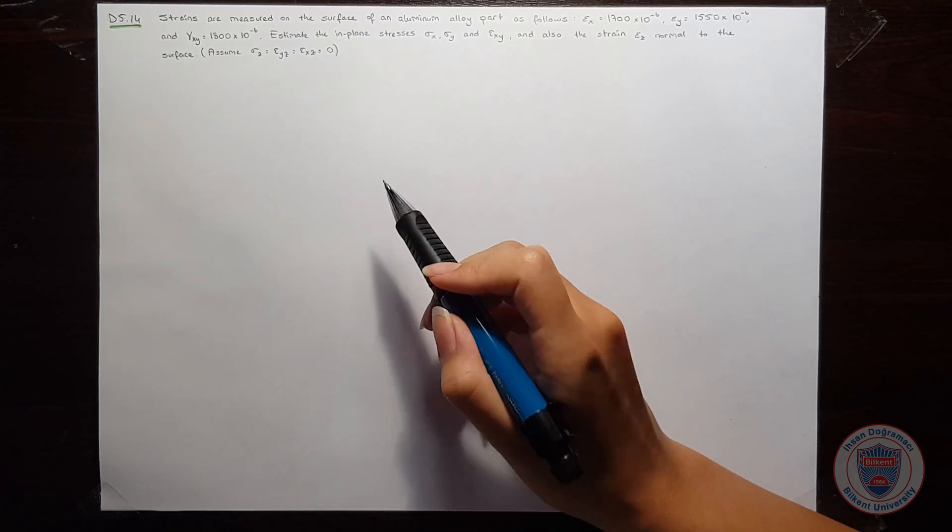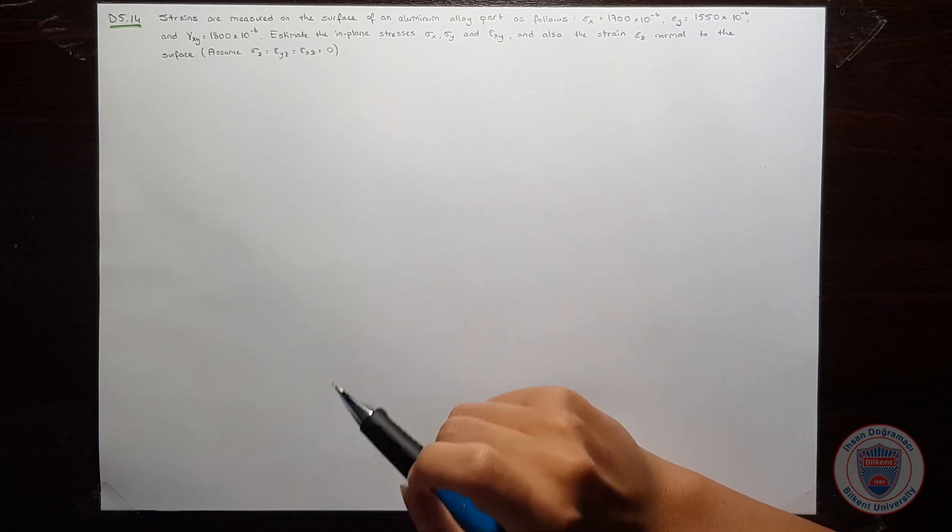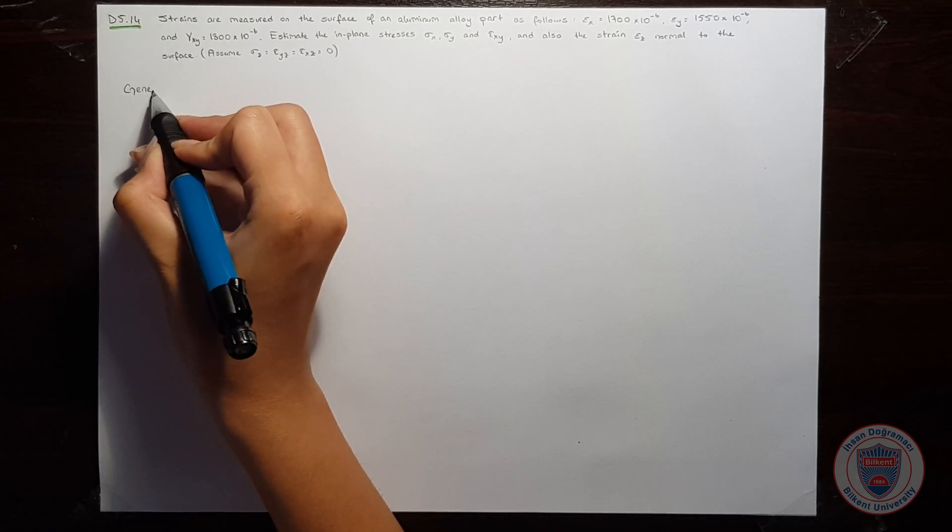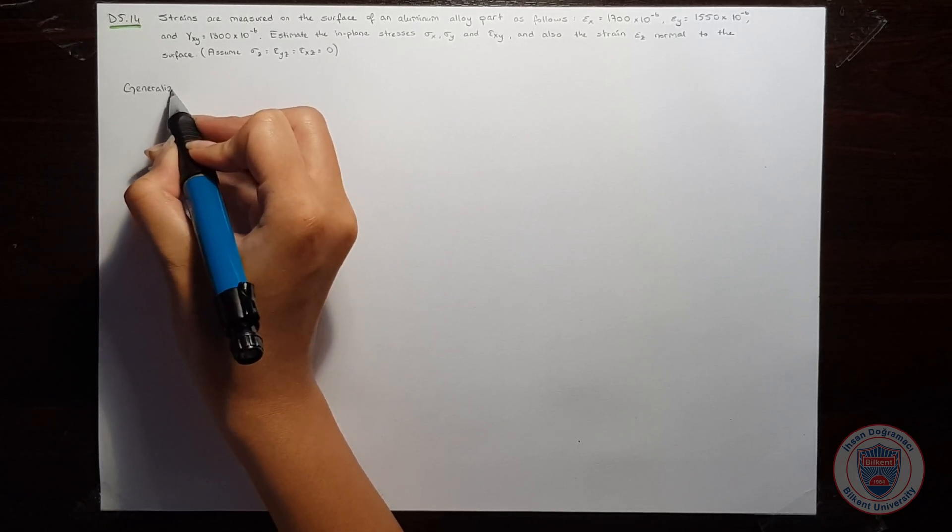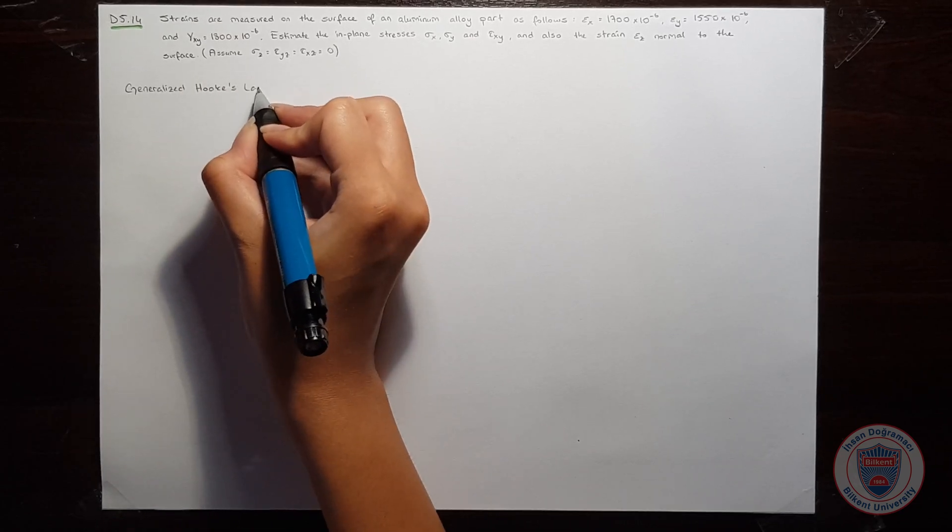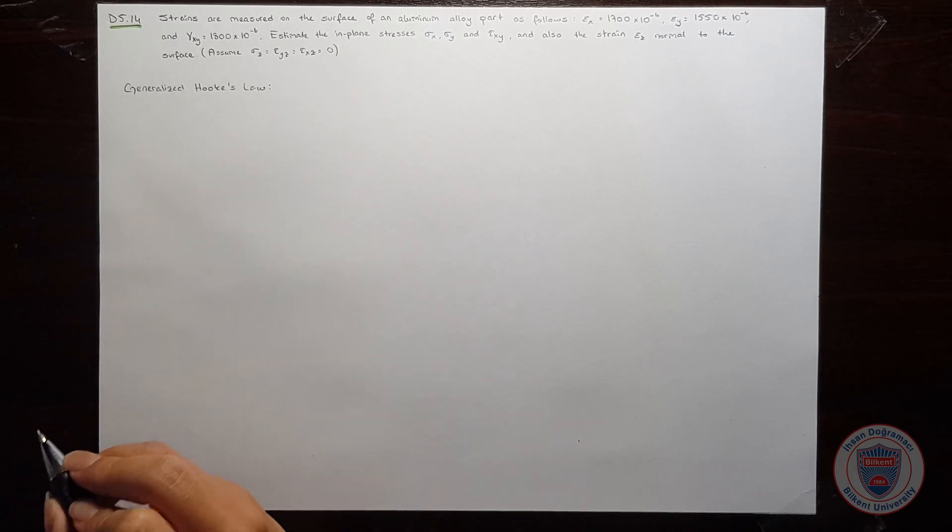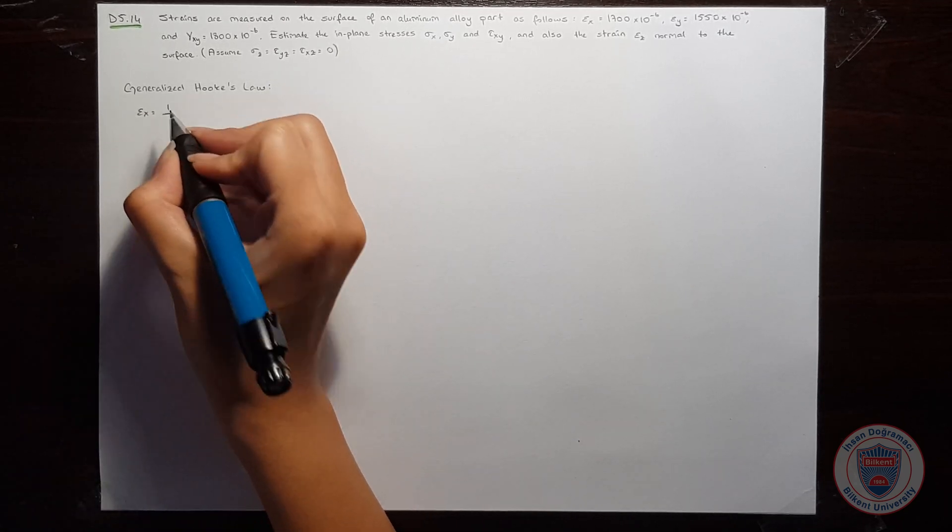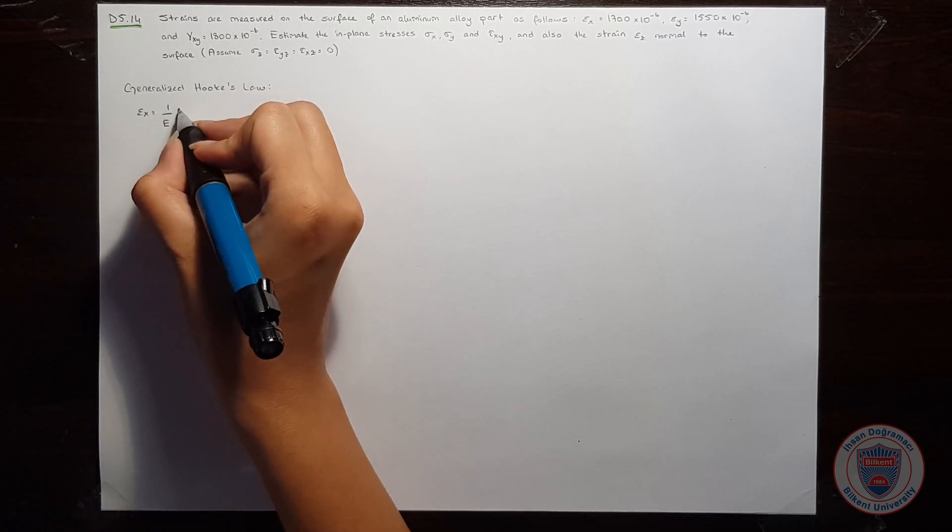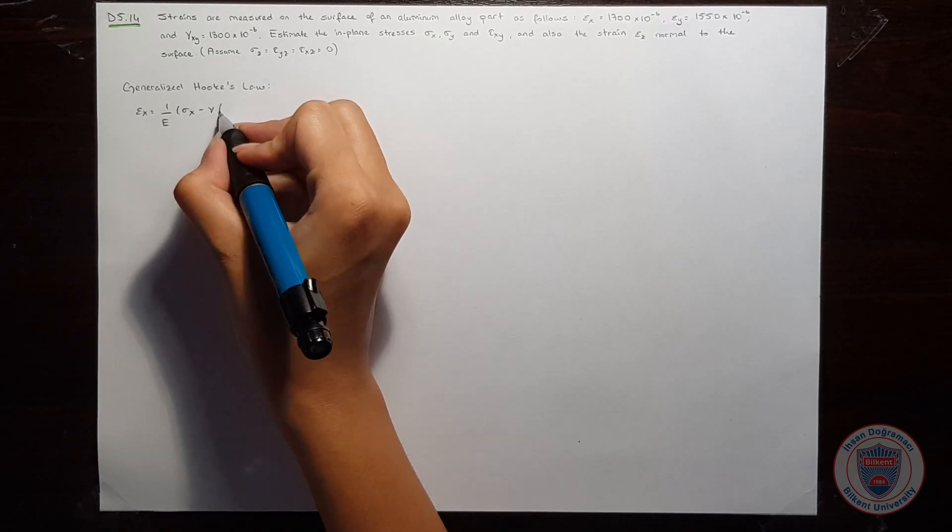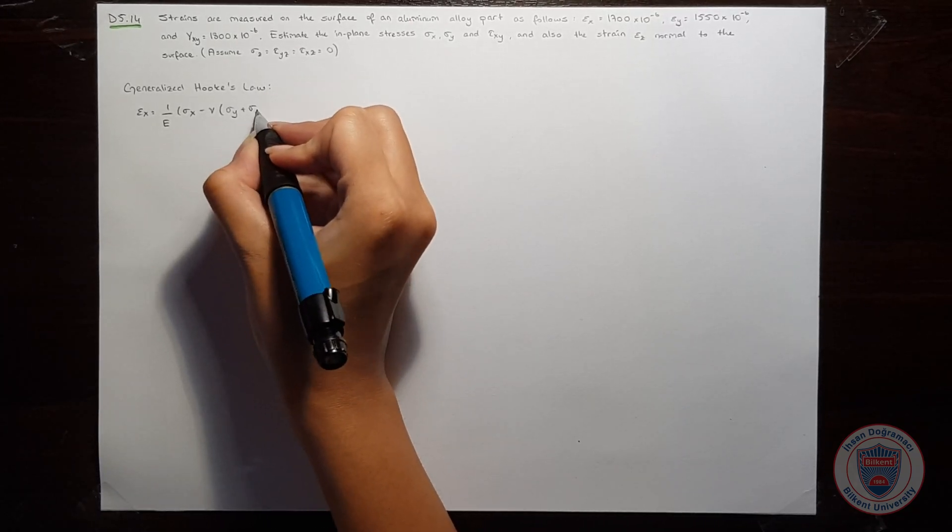To solve the question, we will use generalized Hooke's law. We know that generalized Hooke's law says that epsilon x is equal to 1 over Young's modulus times sigma x minus Poisson's ratio times sigma y plus sigma z.